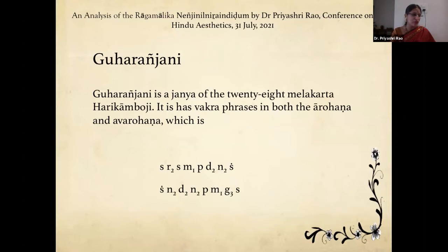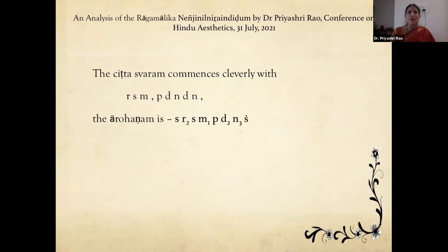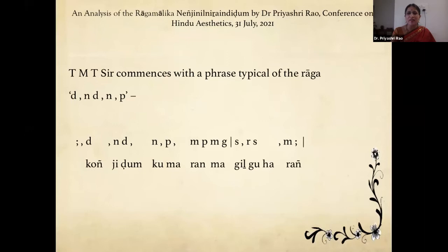Let us see how T.M.T. sir has handled this raga. He begins with a phrase that is very typical of the raga, and in the chittaswaram he very cleverly uses Ri Sa Ma Pa Da Ni Da Ni. The aarohanam is Sa Ri Sa Ma Pa Da Ni Sa — he could have started it that way, but instead starts it as Ri Sa Ma Pa Da Ni Da Ni. You can see the same occurrence in 'Konjidun Kumaran Magil' — he has halted the phrase there.